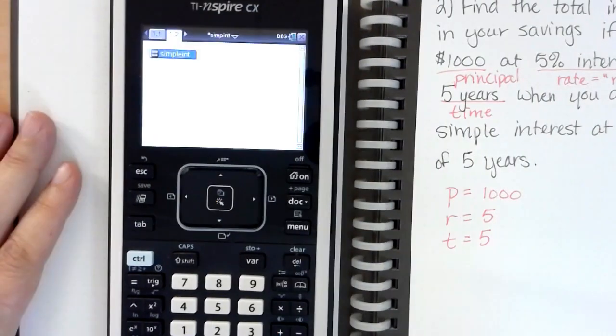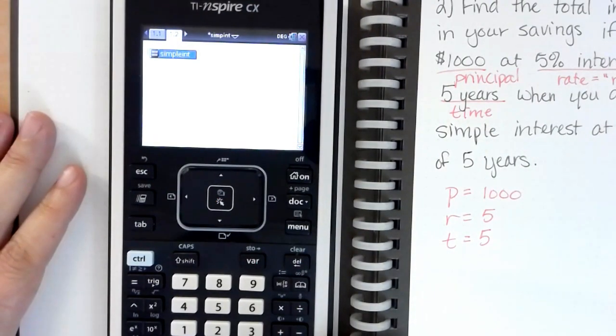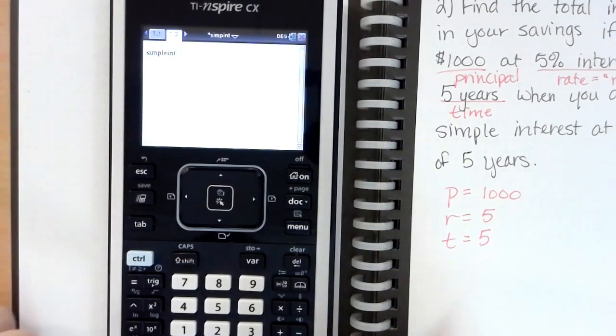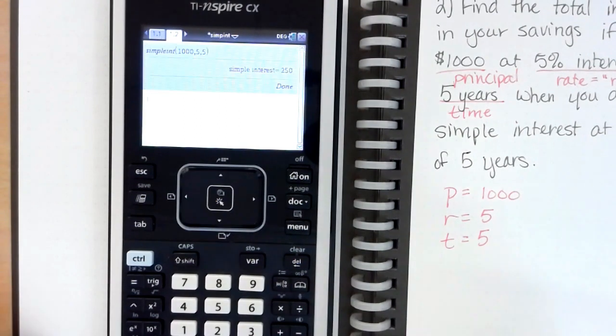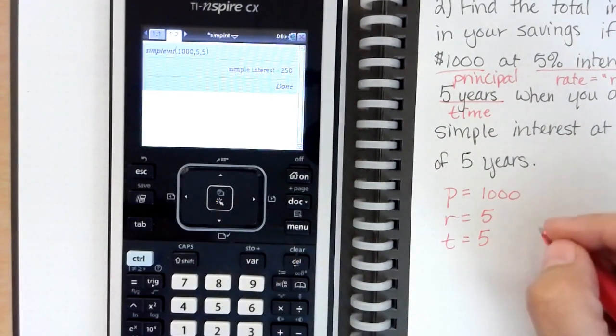Then on our calculator we're going to push the var button, hit enter, and we're going to put in our three numbers: one thousand comma five comma five. Enter and we see our simple interest is two hundred and fifty dollars.